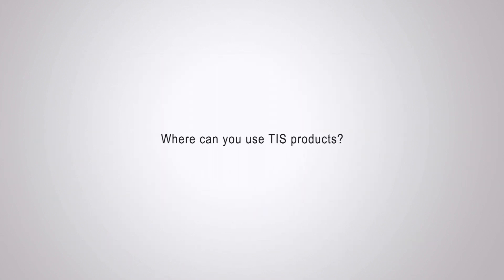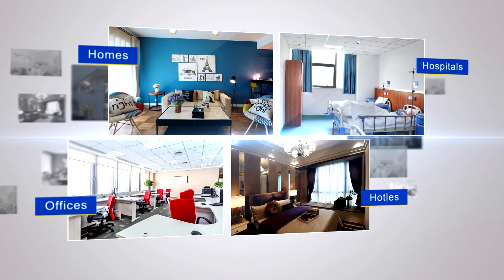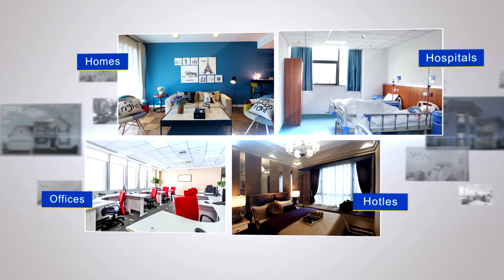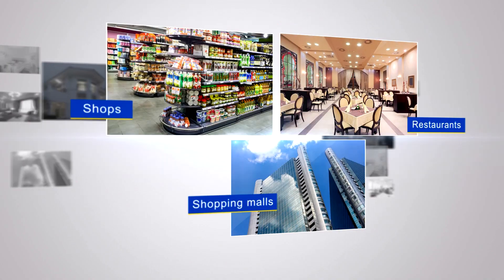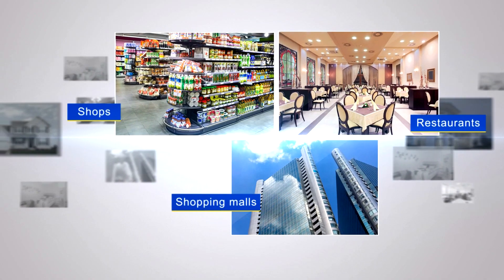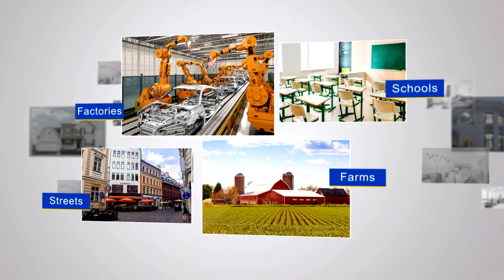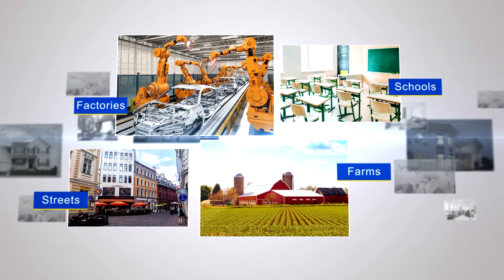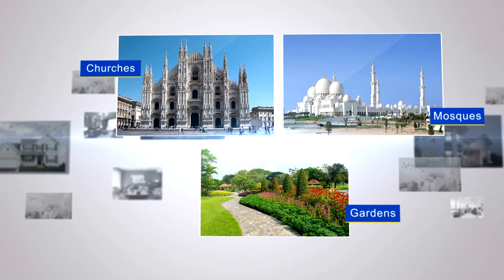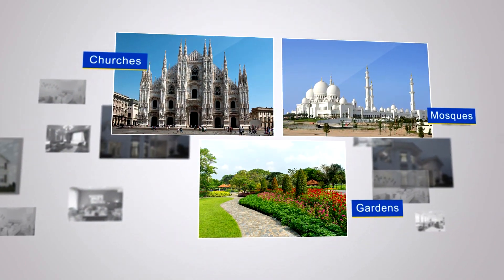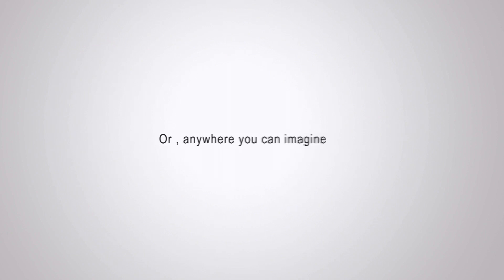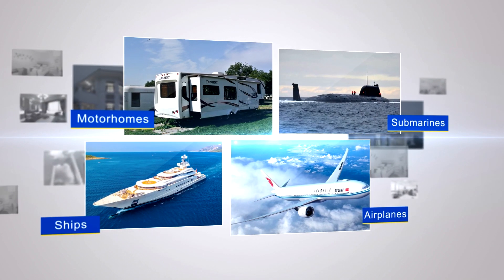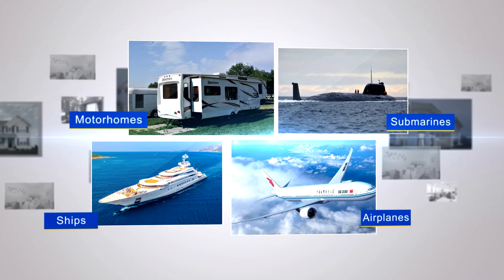Where can you use TIS products? At homes, hospitals, offices, hotels, shops, restaurants, shopping malls, factories, schools, streets, farms, churches, mosques, gardens, or anywhere you can imagine — including motor homes, submarines, ships, and airplanes.